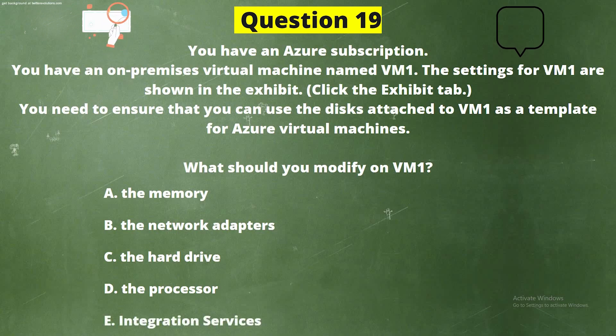Question 25. You have an Azure Active Directory tenant named Aditium and an Azure subscription named Subscription1. Aditium contains a group named Developers. Subscription1 contains a resource group named Dev. You need to provide the Developers group with the ability to create Azure Logic Apps in the Dev resource group. Solution: on Subscription1, you assign the Logic App Operator role to the Developers group. Does this meet the goal? The correct answer is Option B — No.